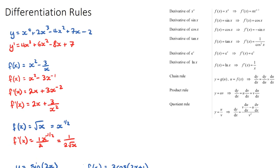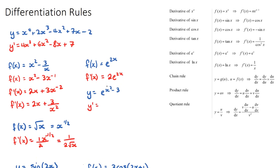For exponential functions, if f(x) = e to the 2x, the rule is: take the derivative of the power — which is 2 — bring it to the front, and the rest stays the same. So f'(x) = 2e to the 2x. We do not reduce the power by 1. A second example: if y = e to the (x squared minus 3), then y' = 2x times e to the (x squared minus 3).